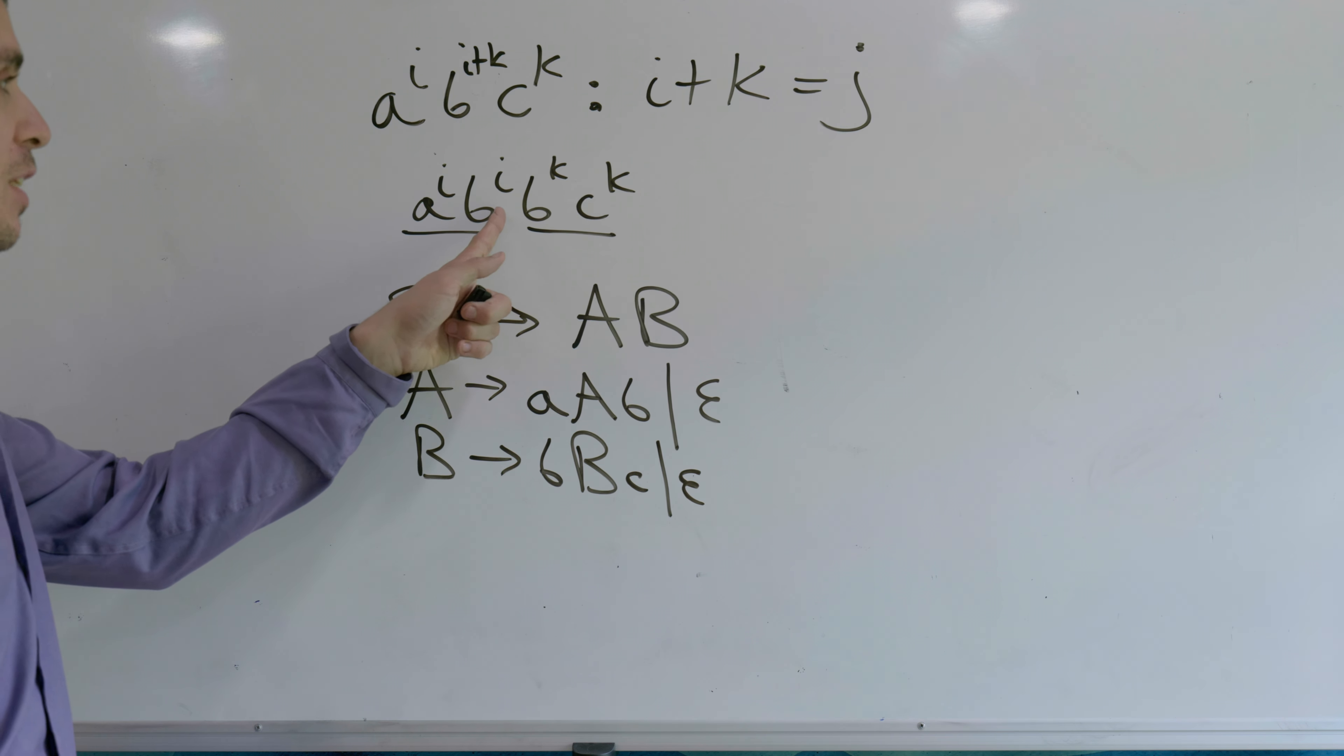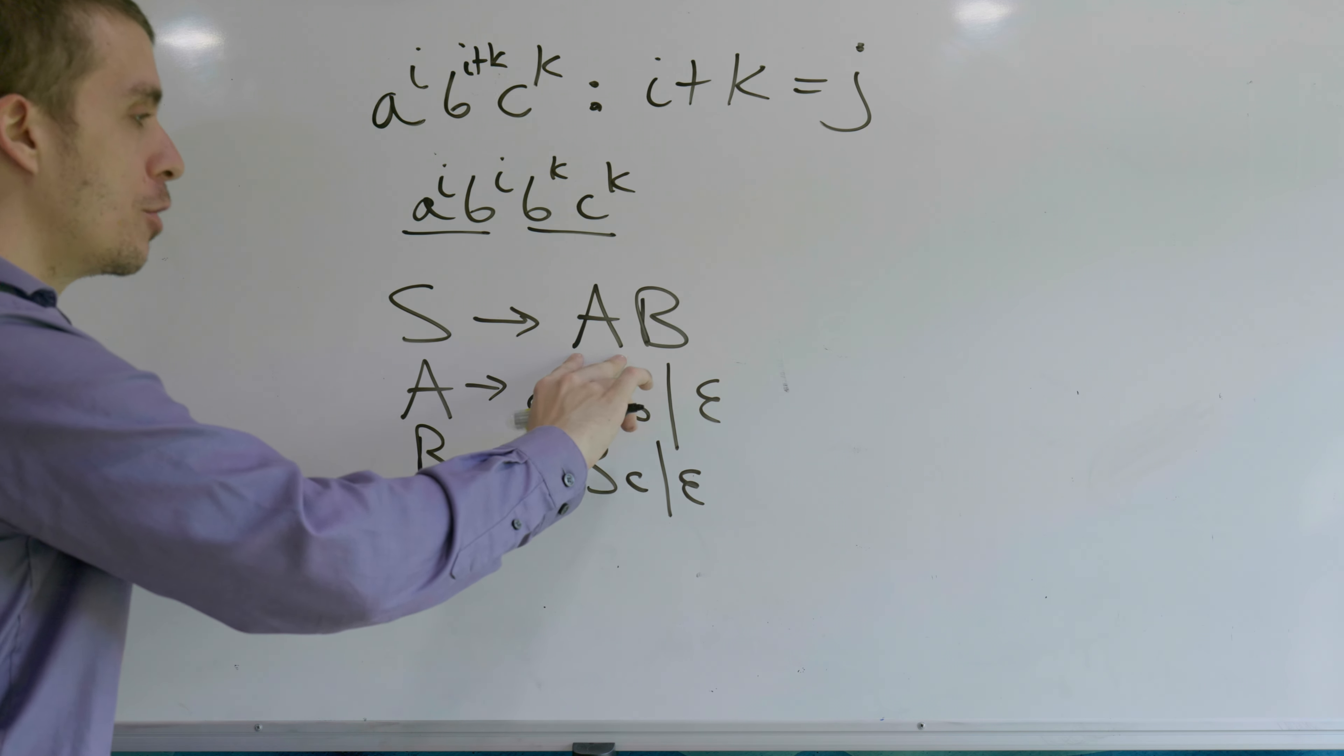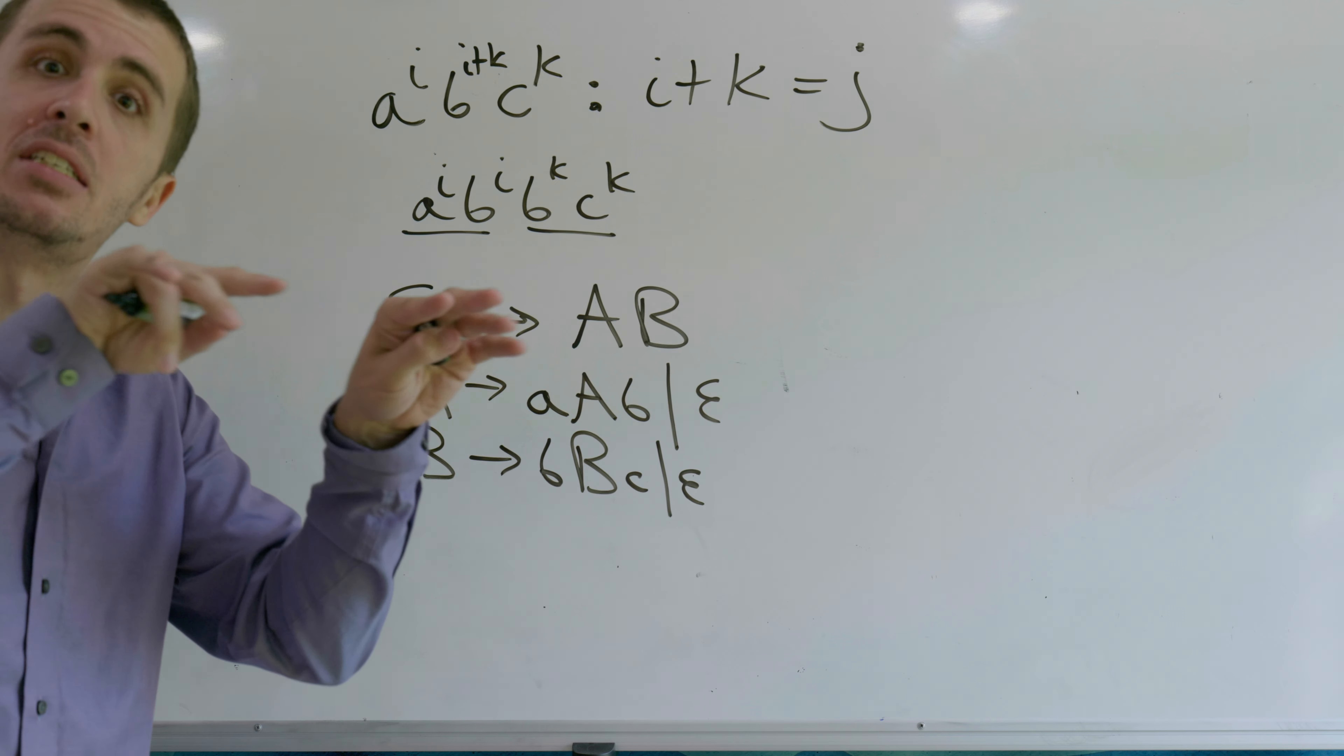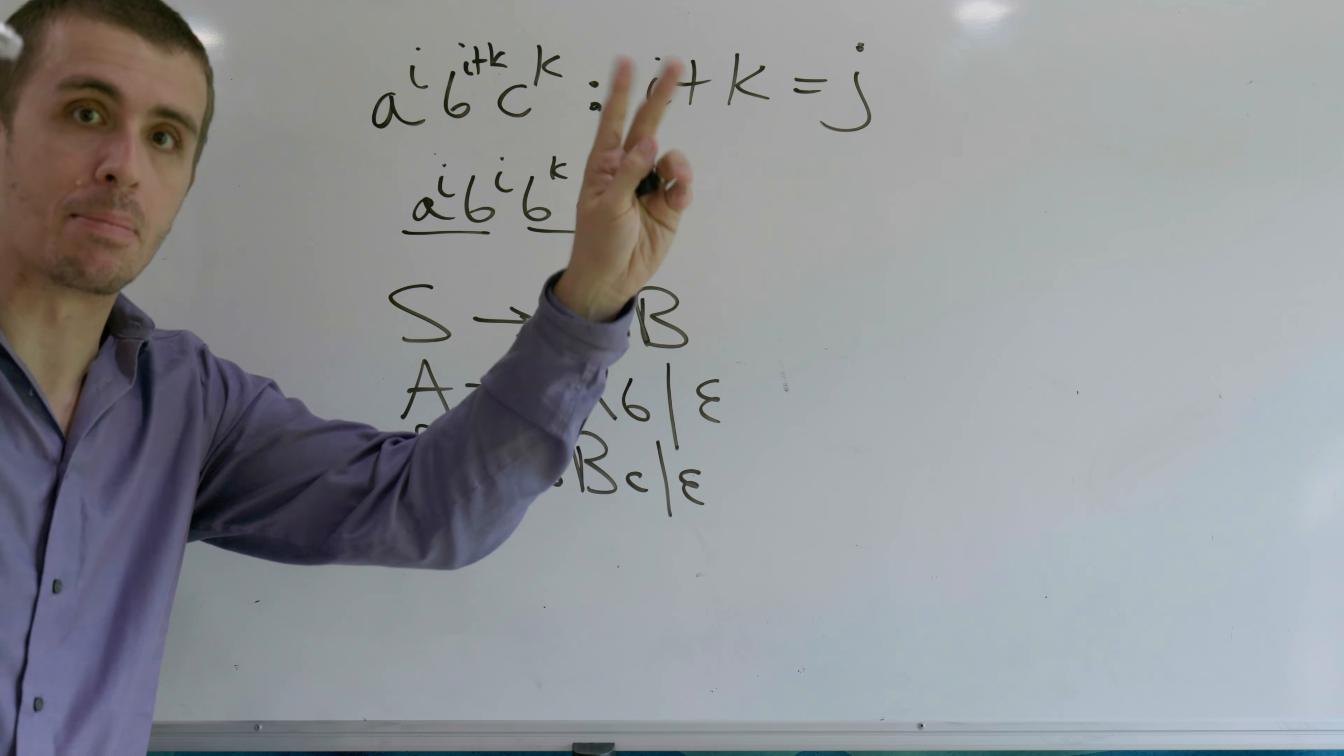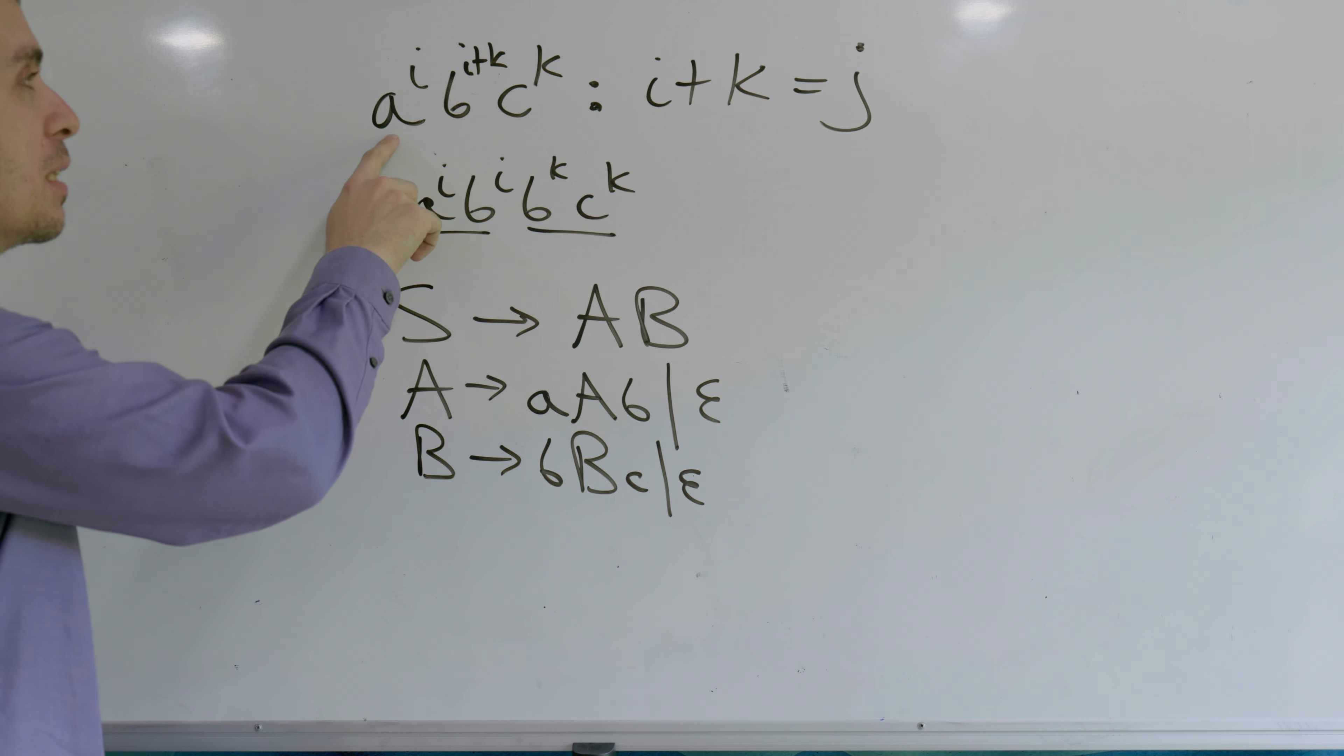So the fact that we can split this up in some sense, even though it's not really splitting it up, allows us to make two different variables to handle the two separate problems, so to speak, completely separately, and then concatenate them together. Therefore, this is a quick and easy grammar for the set of all strings of the form a^i